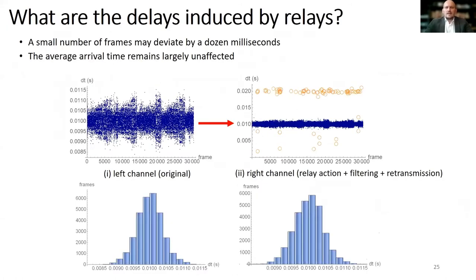The third question is what delays are caused by relays on legitimate frames? They encounter only slight delays, as you can see in this plot. The left plot shows the arrival time on the left channel, which is the source of the frame, and the right plot shows the arrival rate on the right channel, where the frames are retransmitted. Only several of the 30,000 frames in these experiments have delays of 10 milliseconds. The histogram distribution shows that the average arrival time is mostly unchanged across the two channels.